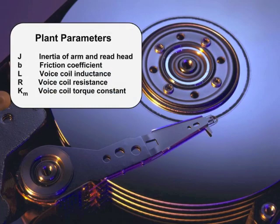While it's not difficult to develop this transfer function, we won't do so at this time. But let me tell you what these parameters in G mean. J is the inertia of the arm and read head. B is a friction coefficient associated with the bearings in the voice coil actuator. L is the inductance of the voice coil, and R is its resistance. Km is the voice coil torque constant. It has units of newton meters per volt.